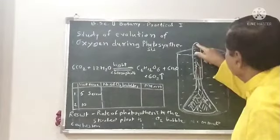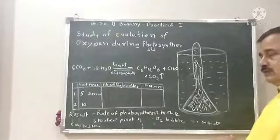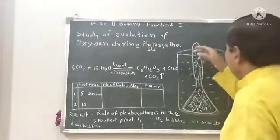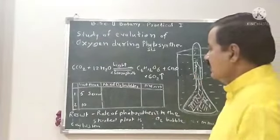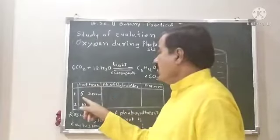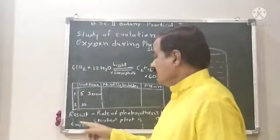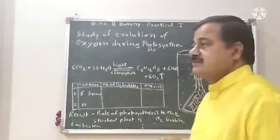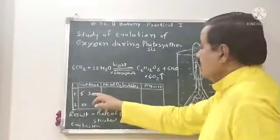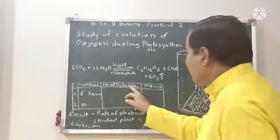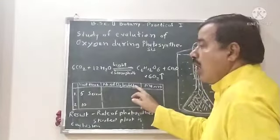An observation table is made with unit time in seconds: 5 seconds, 10 seconds, 15, 20, 30, etc. In five seconds, the number of bubbles that occurred is recorded.